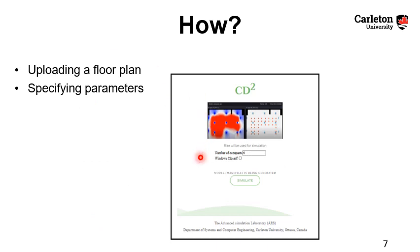Now in another screen, the user can specify the number of occupants, how many occupants are there in this space, and then the tool can randomly generate these occupants in different spaces in the room. And the user can also specify whether the windows of the space are closed or open. And this makes a difference on the CO2 concentration in this closed space.